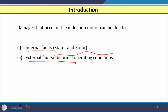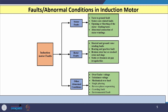For both cases — internal faults and external faults very near to the motor terminal or abnormal operating conditions — damage may occur to the induction motor. Considering internal faults, the first type is stator faults. In stator faults, the first are turn-to-ground faults, the second are related to the stator core. If a fault occurs in the core of the stator or in different turns of the stator winding, damage of the induction motor occurs.